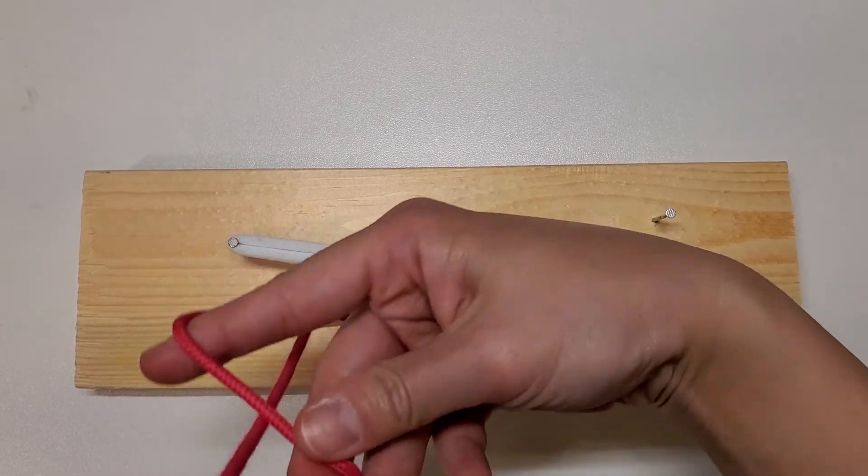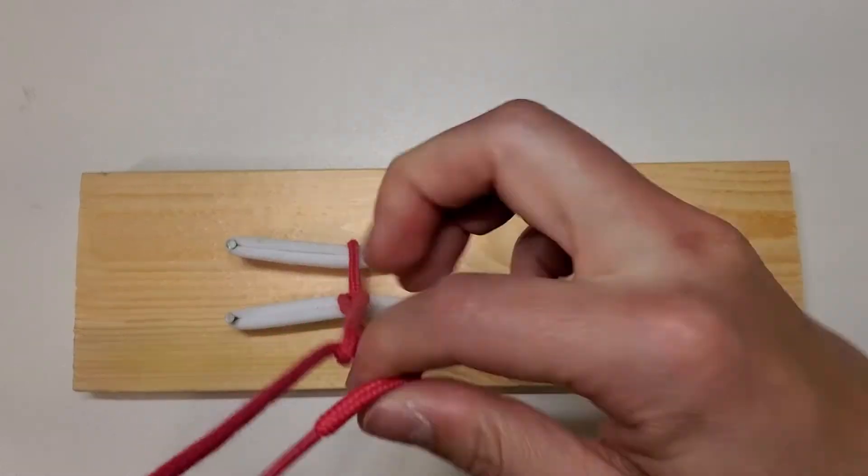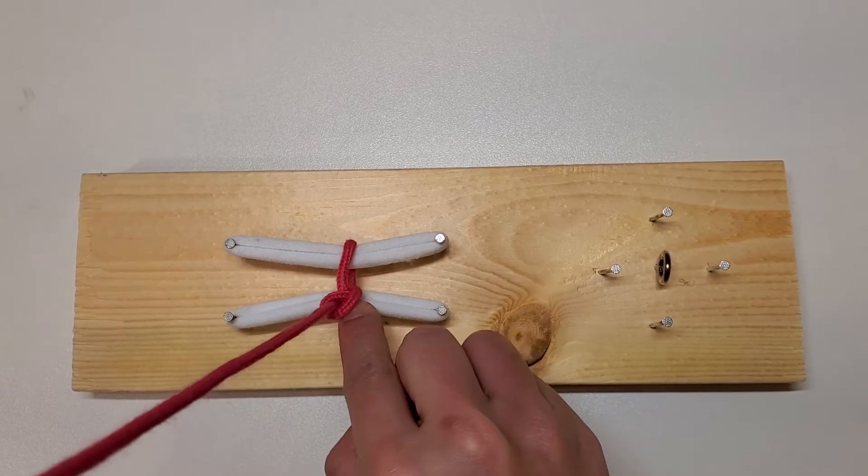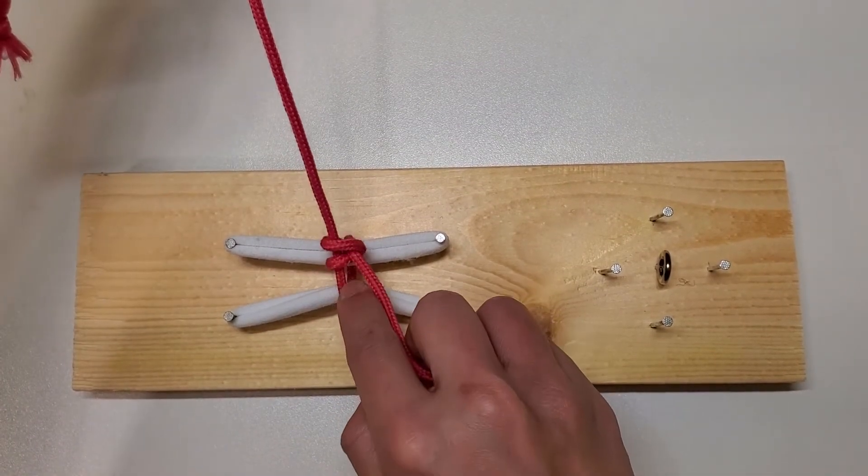Now if I repeat the same motion, I now have two slip knots going around the post. Two slip knots.